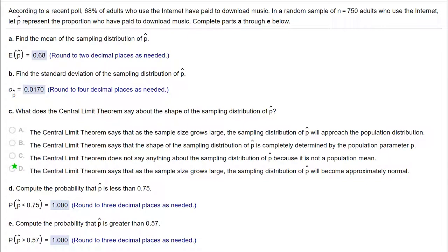Hi, this is Dr. Don. I have a problem out of Chapter 5, Section 4 on sampling distributions. This one is about a sampling proportion. The problem says according to a recent poll, 68% of adults have used the internet to download music. In a random sample of n equals 750, let p hat represent the proportion who pay to download music.